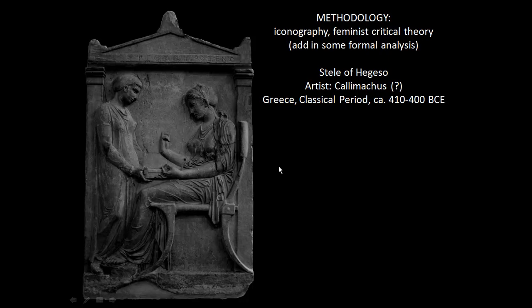This is an important point of iconographical analysis. The jewels can symbolize wealth — clearly this is a wealthy woman, as not every Athenian woman would have had the privilege of such a lovely stele. But we can also think about the temporary nature of wealth: when we die, we don't take our wealth with us. These types of images are called vanitas images — the idea of the transience of life, beauty, and time; nothing lasts forever. So this could be an expression of wealth but also a contemplation of the temporary nature of life.